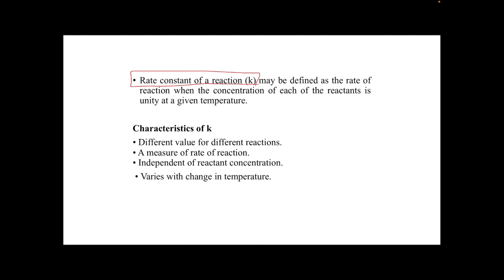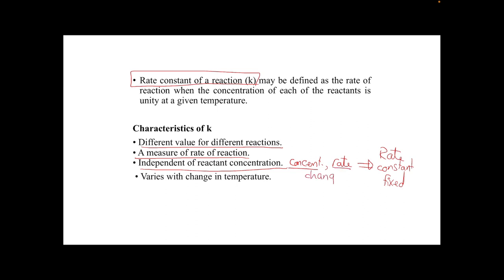The rate constant K has a different value for different reactions — each reaction has its own K value. K is kept in textbooks; it is not something to be memorized. It is a measure of the reaction rate, independent of reactant concentrations. So as concentrations change, the rate changes, but the rate constant remains constant. K only varies with temperature — changes in temperature affect the K value.